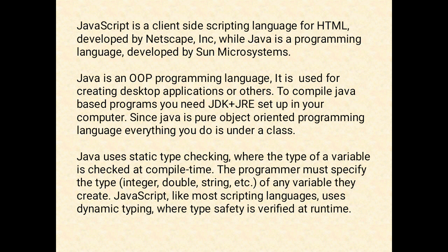Java uses static type checking, where the type of a variable is checked at compile time. The programmer must specify the type of any variable they create. JavaScript, like most scripting languages, uses dynamic typing, where type safety is verified at runtime.